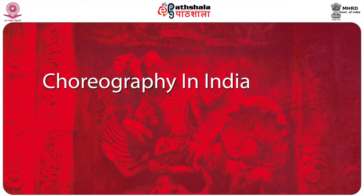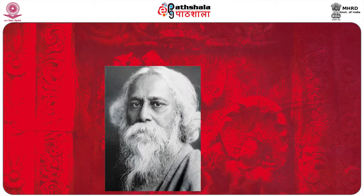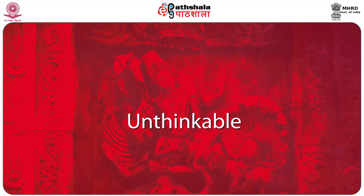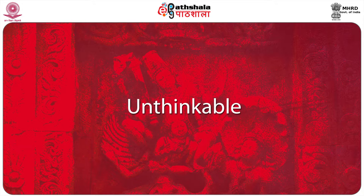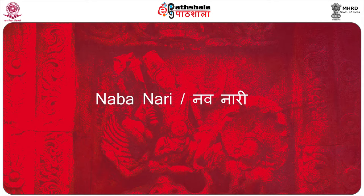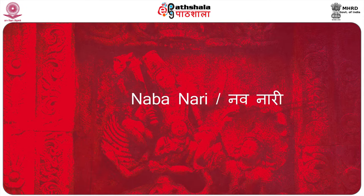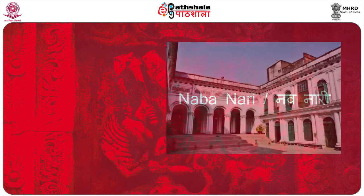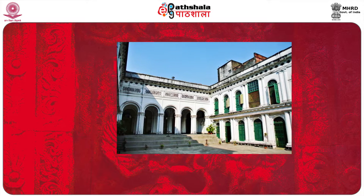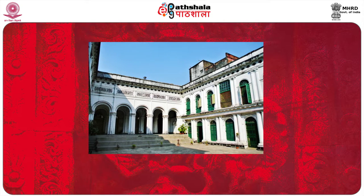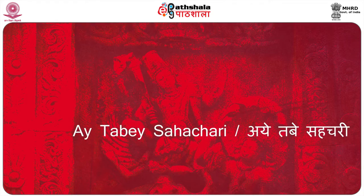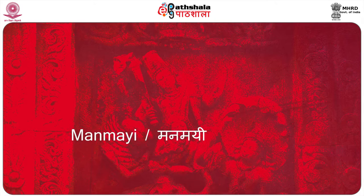The first initiatives in choreography were directed by Rabindranath Tagore. At the time that Tagore was making his experimentations with choreography, it was unthinkable for women from good families to dance on a public platform. Though women had begun to be seen on public platforms of modernity in the form of the nabunari, dancing was unthinkable. But a liminal space was the performance space of Jorasanko, the Tagore household in North Calcutta, where there was an environment of plays, music and poetry. As early as 1880, Tagore composed a dance for the song 'Ae Tabbe Sahachari' in the play Manamai, written by his brother.